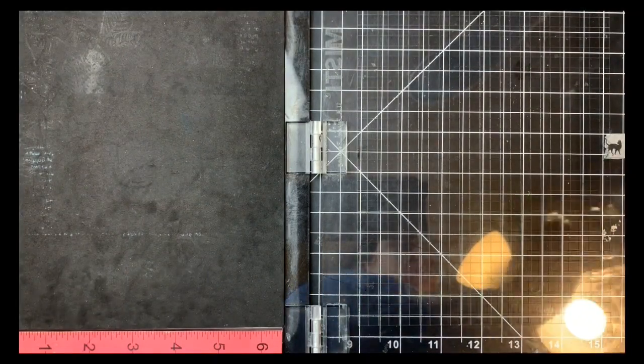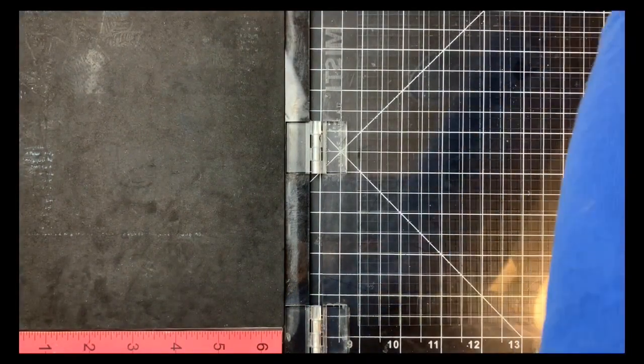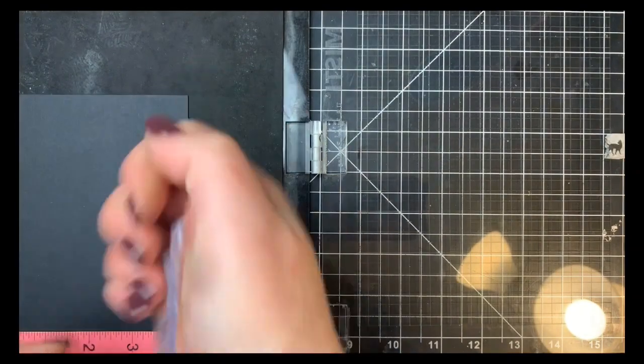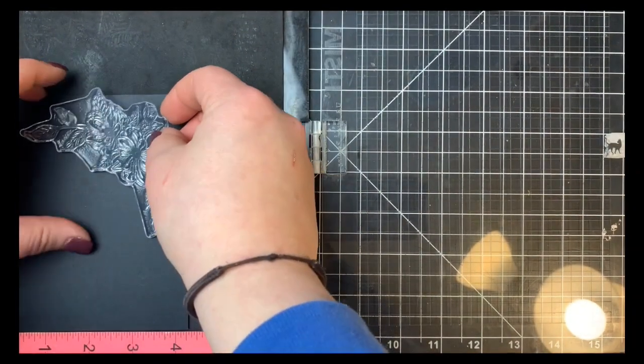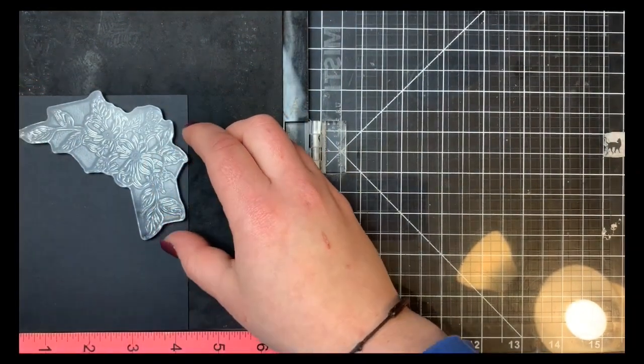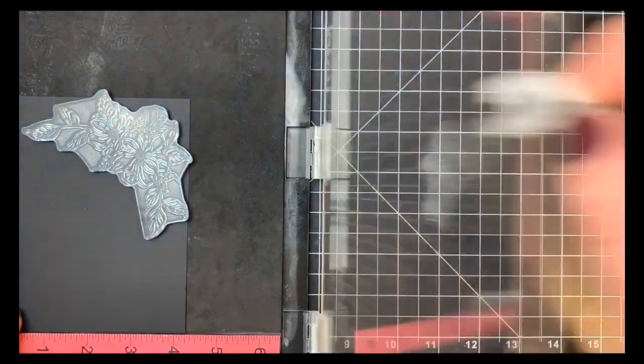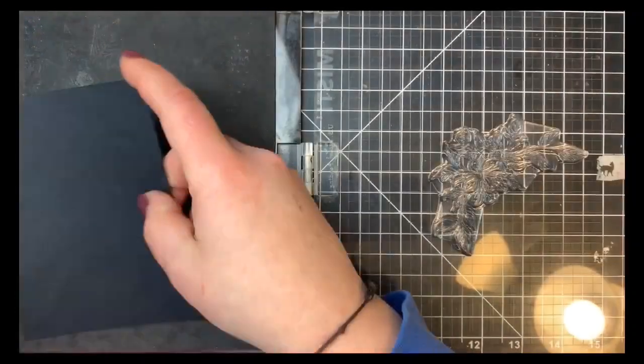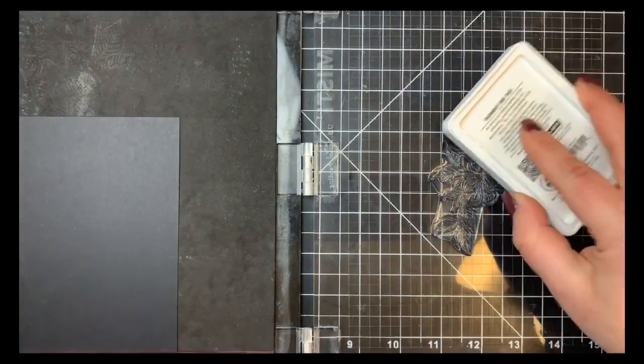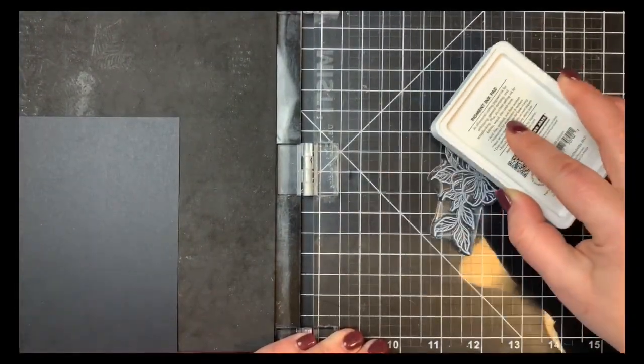I am going to bring out my stamp positioner just because it is a larger image and just in case I needed to stamp it twice. So I'm working on a piece of black cardstock and you'll want to use a pretty heavyweight cardstock for this. This is cut down to four and a quarter by five and a half. I'm just placing my image on the top right hand corner and I'm going to be stamping this with white pigment ink.